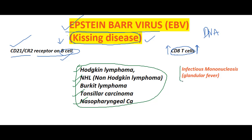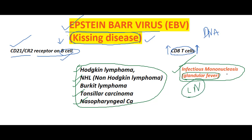One milder form of infection caused by Epstein-Barr virus is infectious mononucleosis. This is also called glandular fever. There will be lymphadenopathy — most commonly posterior cervical lymphadenopathy. Patients will also have pharyngitis, and the atypical CD8 T cell count will be more than 10 percent.